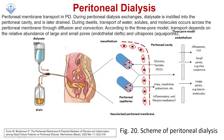This diagram shows how peritoneal dialysis works. We can see the abdominal cavity, the catheter, and the dialysate fluid coming in to clean, then draining out. Mesothelium cells lining the peritoneal cavity act as the membrane. On one side is the peritoneal cavity; on the other are peritoneal capillaries carrying blood. Toxic substances move from the capillaries into the peritoneal cavity, while glucose, lactate, and useful components move from the cavity into the capillaries.